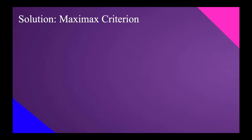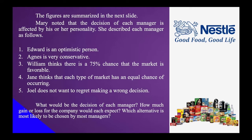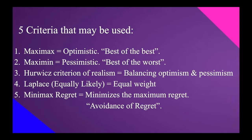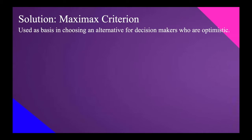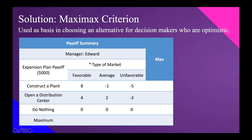First solution: let's use the Maximax criterion. Edward is an optimistic person, so we use the Maximax criterion for Edward. The Maximax criterion chooses the best of the best and is used as a basis for decision-makers who are optimistic, just like Edward. We have the same payoff summary table.